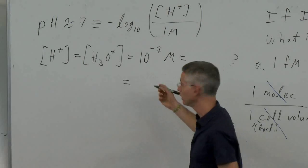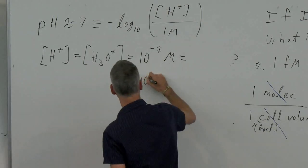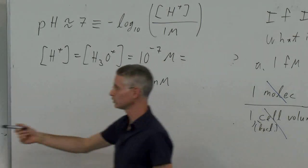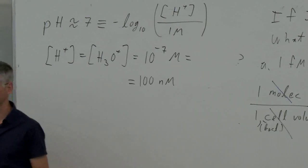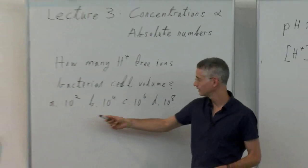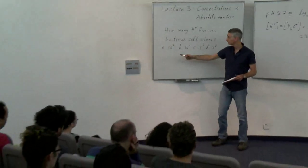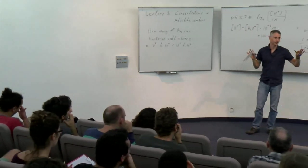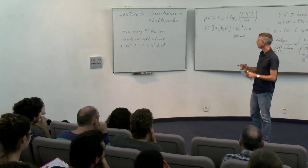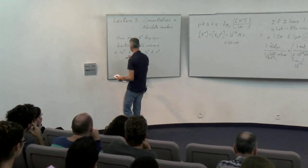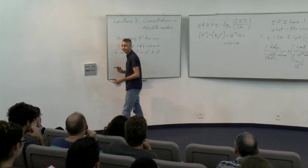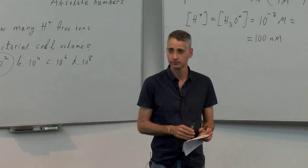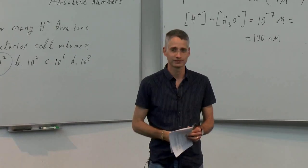So let's vote again. Who thinks it's 10 to the 2? We can stop here. 100 nanomolar — we have the rule of thumb. One nanomolar is one molecule per bacterial cell, so 100 nanomolar is about 100 free hydronium ions in a bacterial cell. That's the order-of-magnitude number. What do you think? Very small — it surprises me every time.